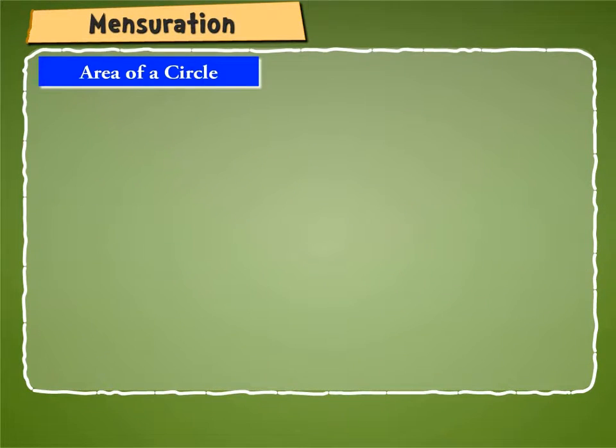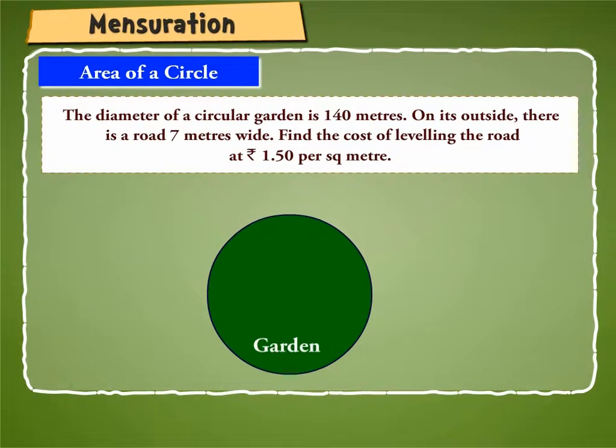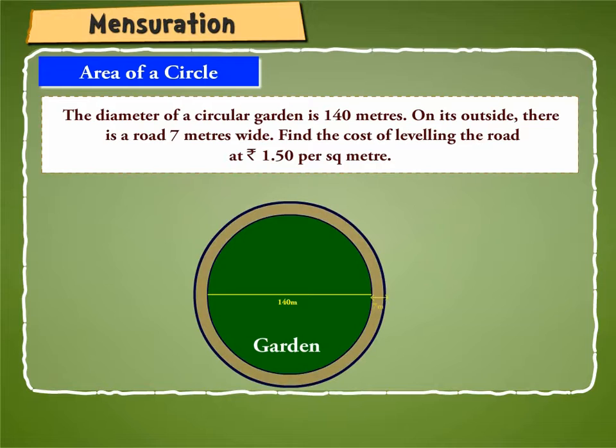Let's take an example to understand this. Suppose the diameter of a circular garden is 140 meters. On its outside, there is a road 7 meters wide. Find the cost of leveling the road at ₹1.50 per square meter.